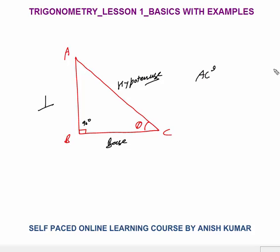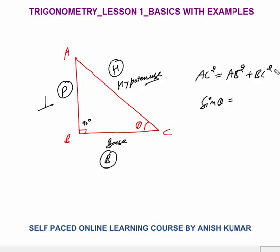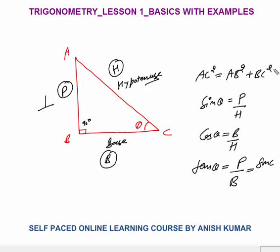By the Pythagorean theorem, AC² = AB² + BC². Very important: the base is the side on which both the 90° angle and theta angle lie. Now we can determine the trigonometric identities. Denoting perpendicular as P, base as B, and hypotenuse as H: sine theta = perpendicular upon hypotenuse = AB/AC. Cos theta = base upon hypotenuse. Tan theta = perpendicular upon base, and also tan theta = sine theta divided by cos theta.